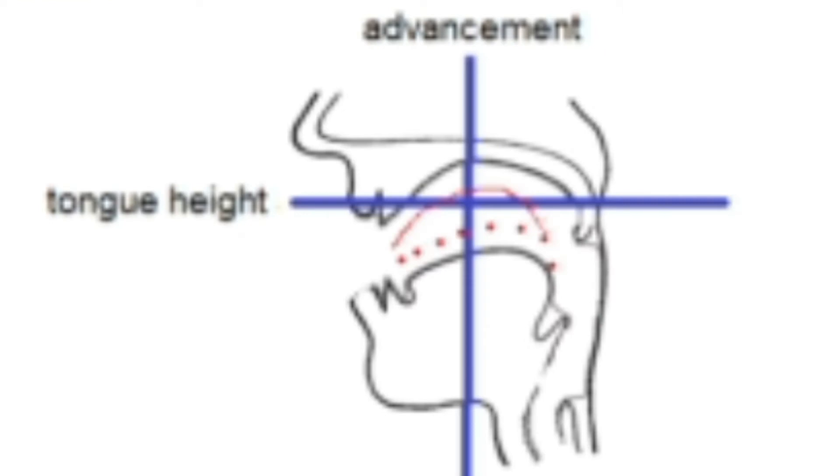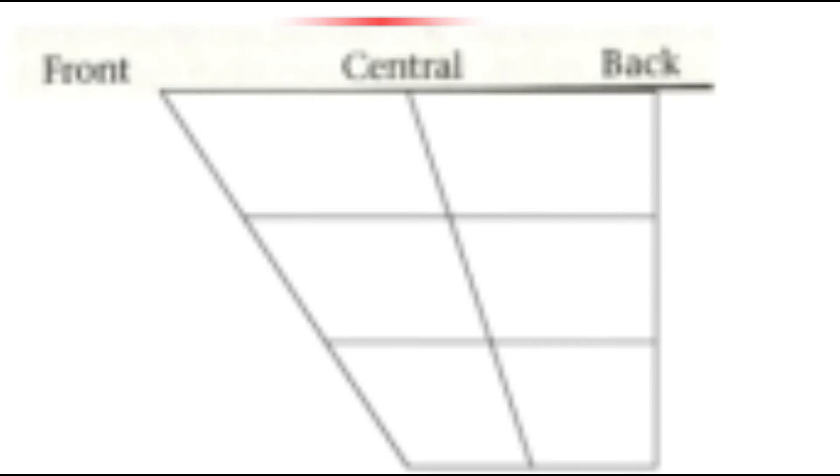The other coordinating point is advancement, which means where the sound originates. Vowel sounds can originate at the front of the mouth, at the back of the mouth, and in the middle of the mouth.